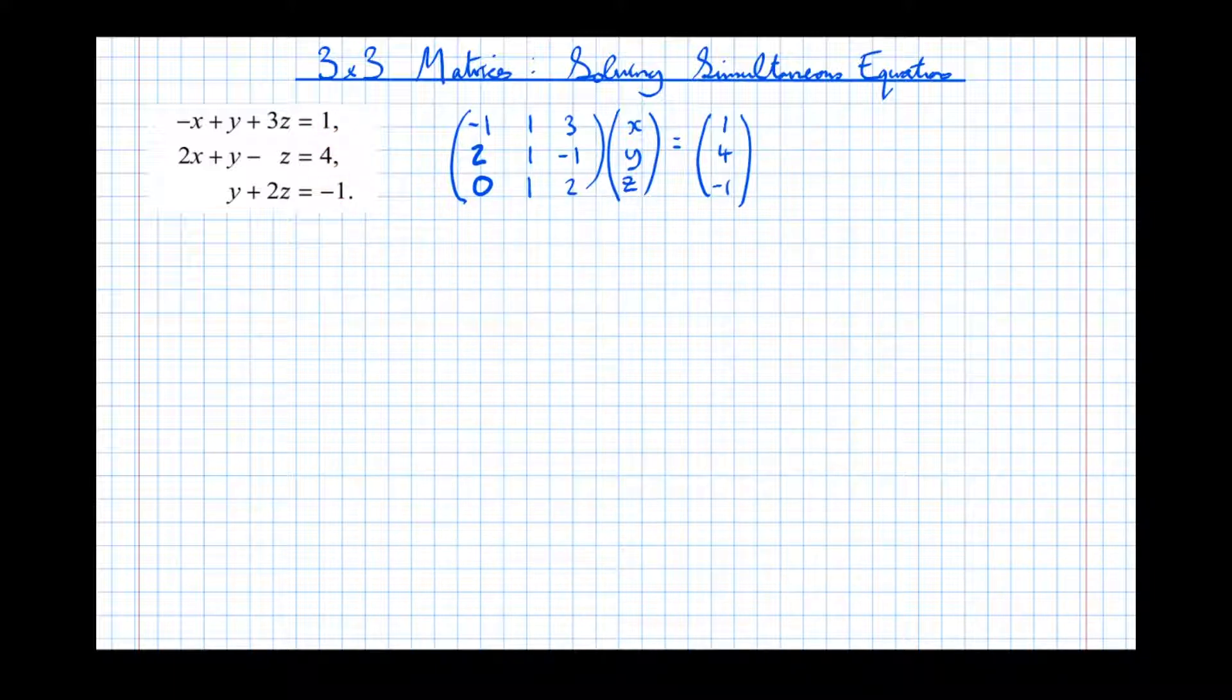Now let's just verify that. Don't take my word for it. Let's have a look at multiplying this matrix out. So if I multiply this out, I get -1 times x plus 1 times y plus 3 times z, which equals 1. 2x plus 1y minus 1z equals 4. And no x's plus 1y plus 2z equals -1. Yes, that system of equations there is represented by this matrix equation.